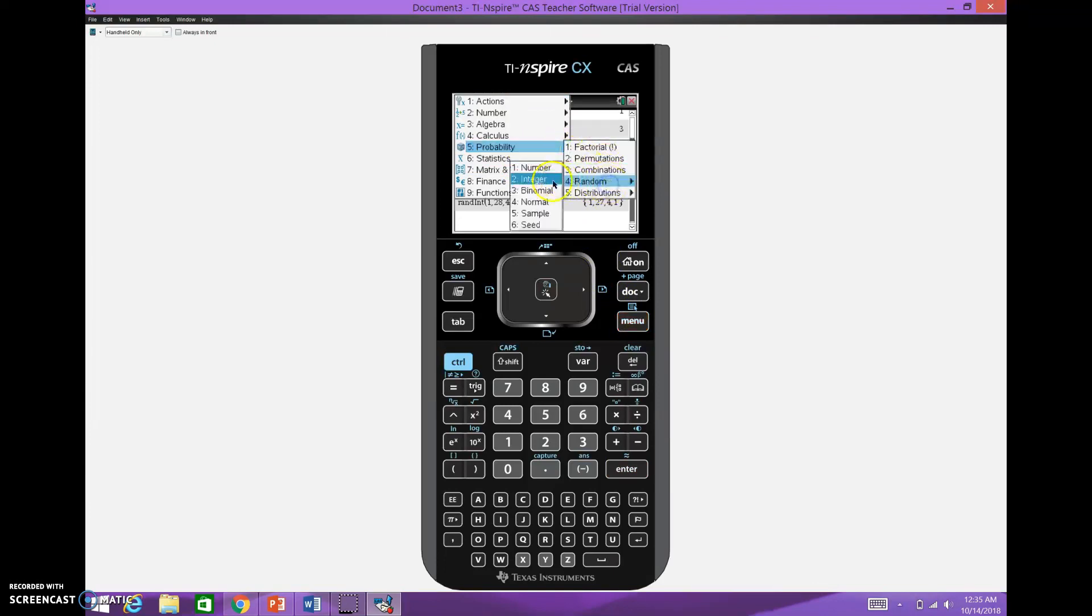So I think sometimes it might be better just to go Menu, Probability, Random, Integer, and just go to one, comma, 28. And then this will just give me the ability to ignore as I go along. So there's Hotel 16, 24, 28, and 8. So I've got my four hotels rather than taking the chance of getting a repeat within there.